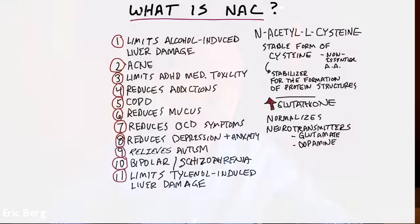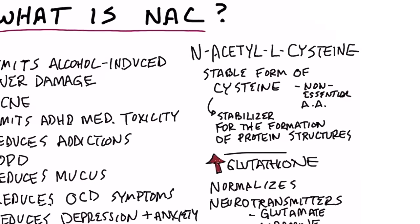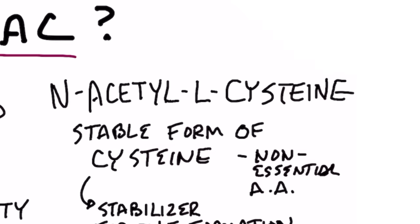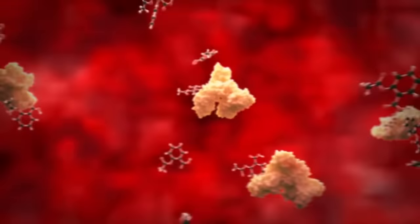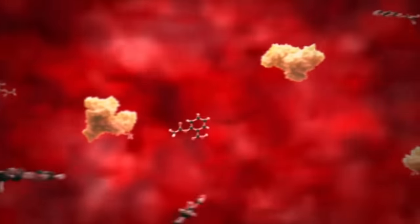So what is this thing called NAC? N-acetyl L-cysteine. That's a stable form of cysteine, which is a non-essential amino acid. Basically, it's a stabilizer for the formation of protein structures in your body. So I'm just going to go into the benefits of what this is and how it can help you.